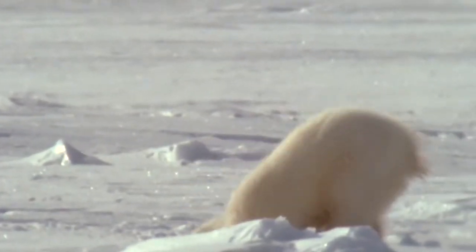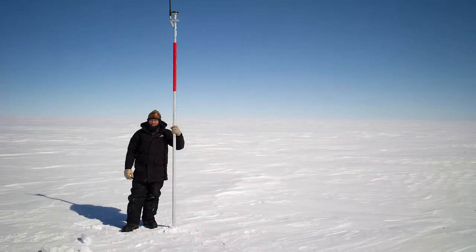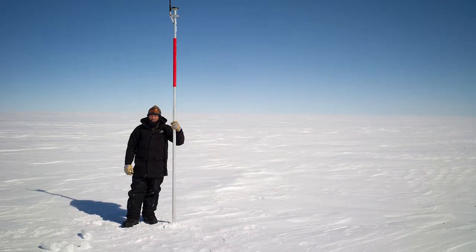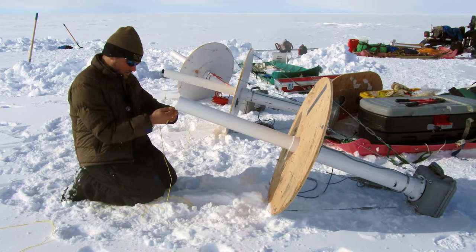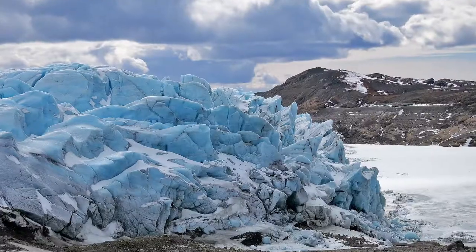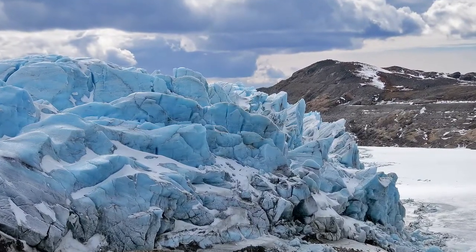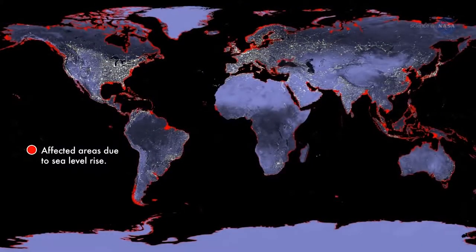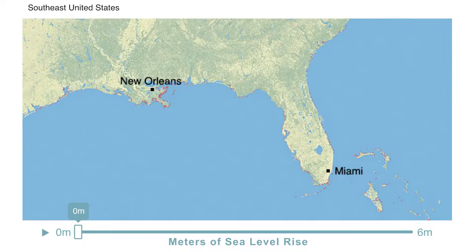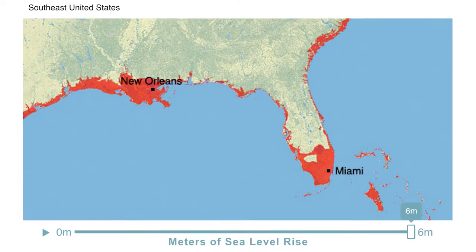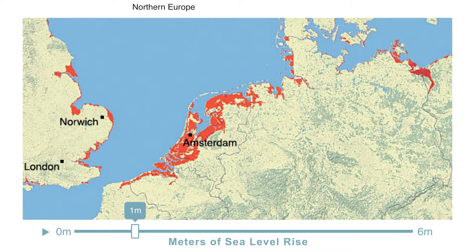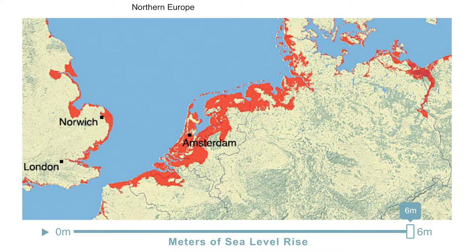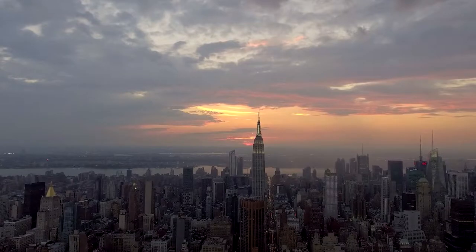But sea ice is not the only part of the cryosphere that's melting. Greenland is a big ice sheet that is melting, and melting from Greenland has impacts well beyond the poles. When Greenland melts, sea level rises everywhere. Sea level rise impacts all people because so many population centers and infrastructure are near the coasts. Hundreds of millions of people globally live within one meter of sea level.